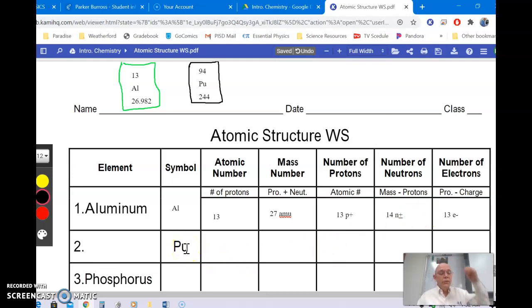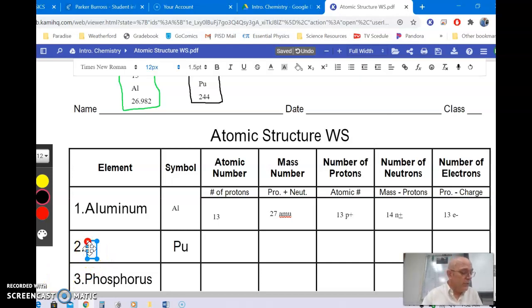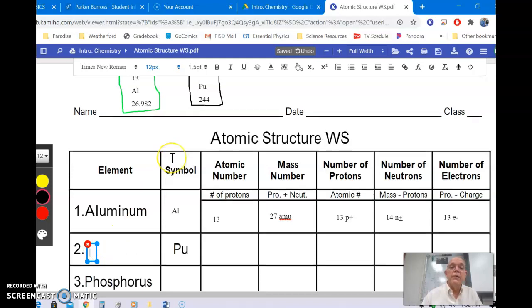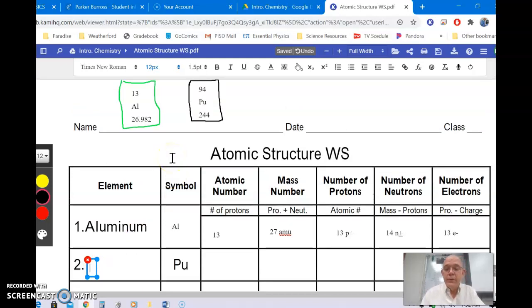We go to the next one, it's Pu. Well, Pu, besides stinking really bad, is down here at the very bottom, so it stinks to find it, I guess. If you look at it, it is element number 94, which you may have noticed from the information I put up here at the top. But plutonium.